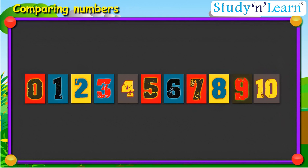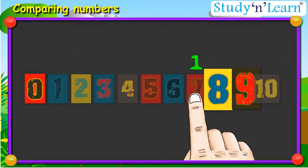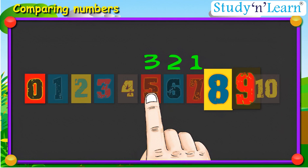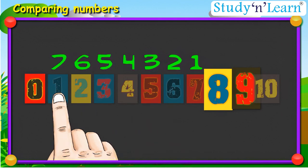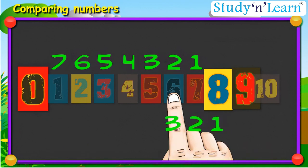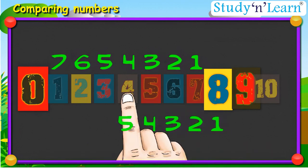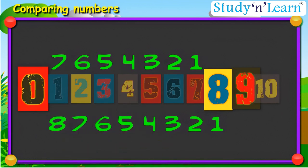For example, in case of 8 and 9, 8 is closer to zero as we count seven steps backwards to reach zero. As compared to 9, where we have to take eight steps. Hence, 8 is smaller than 9.